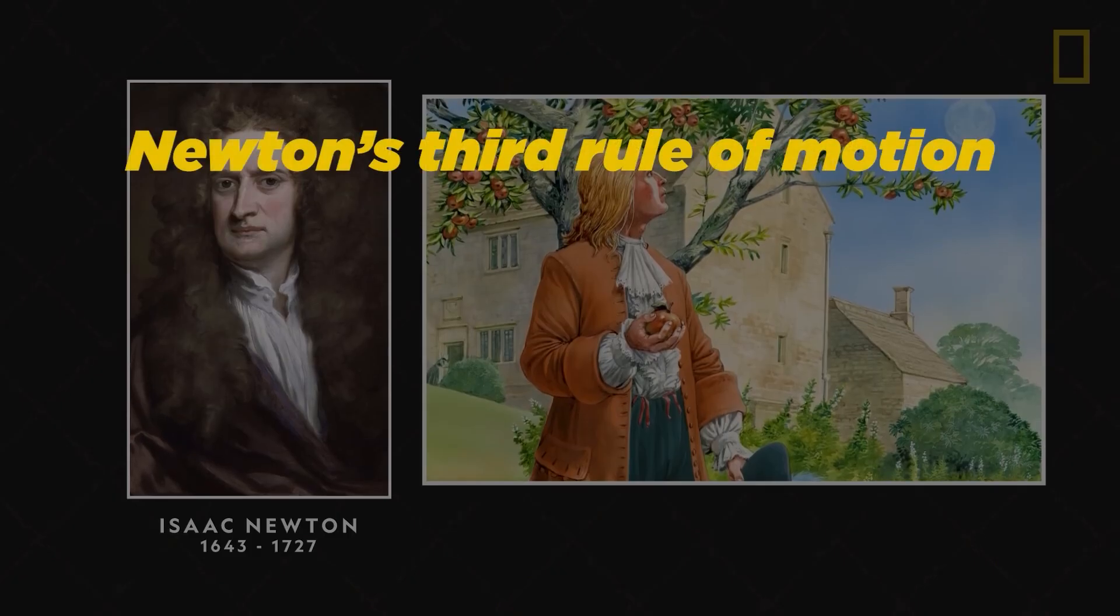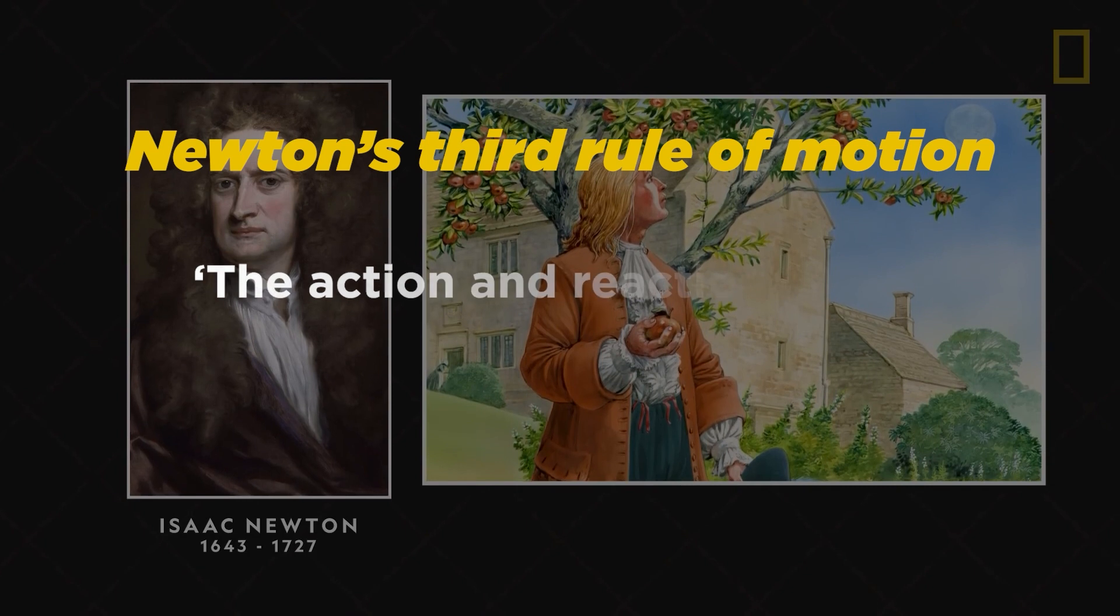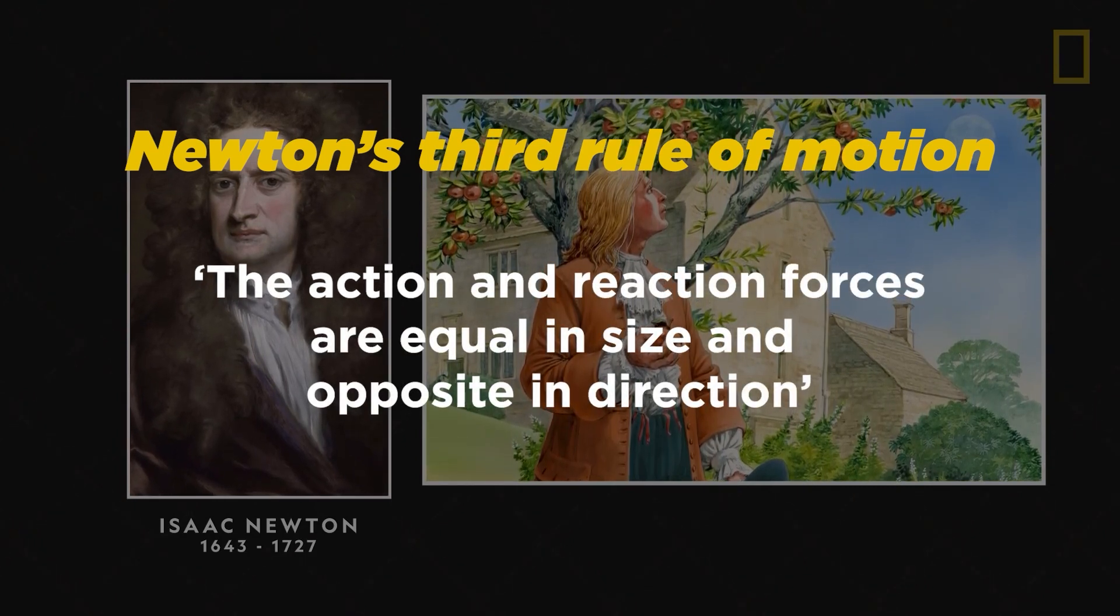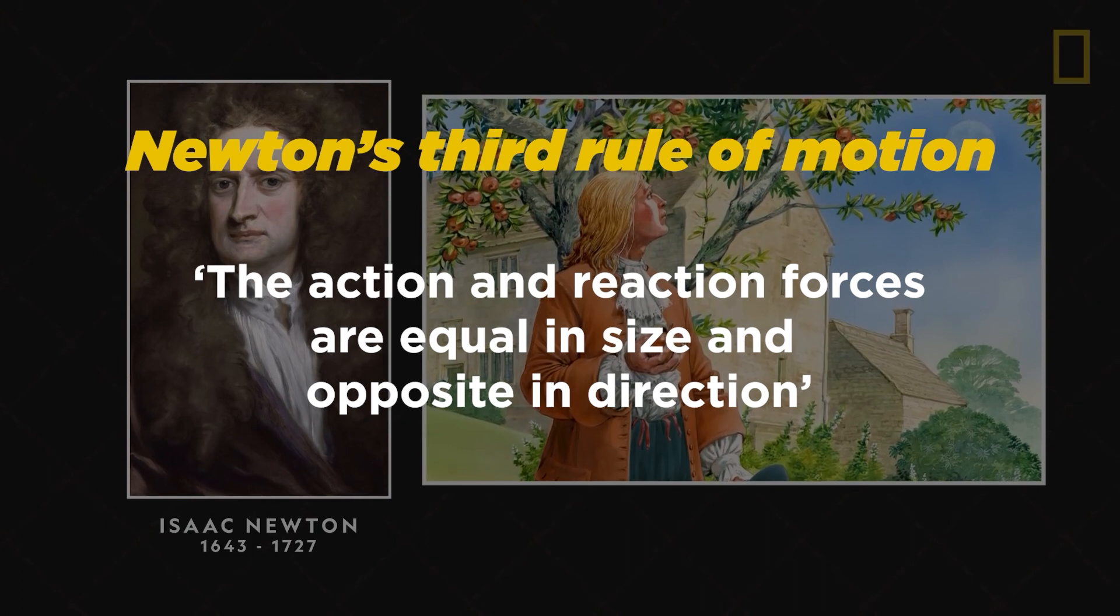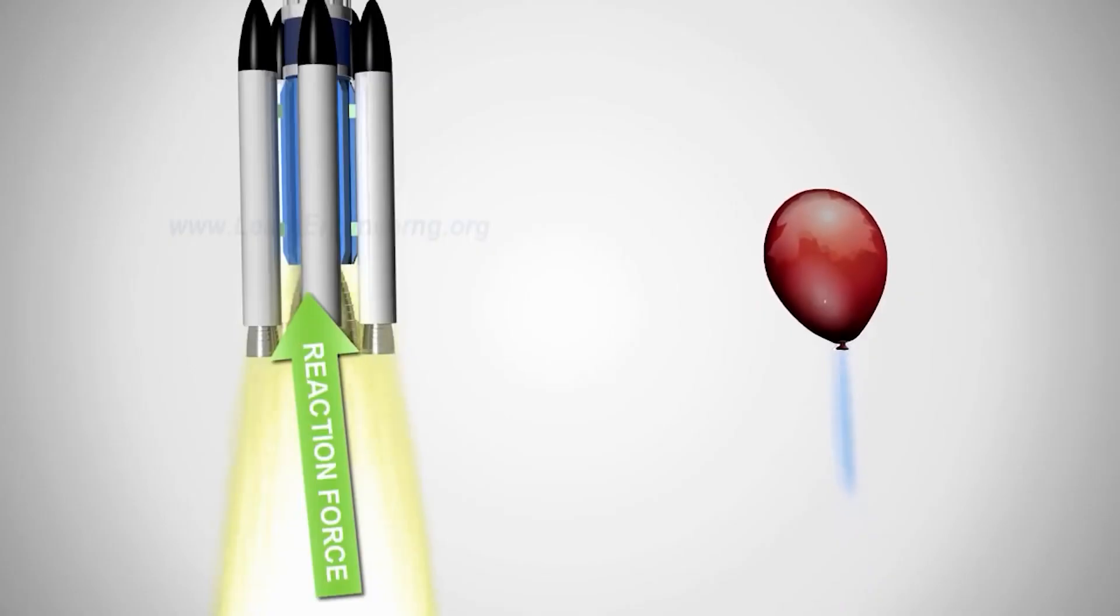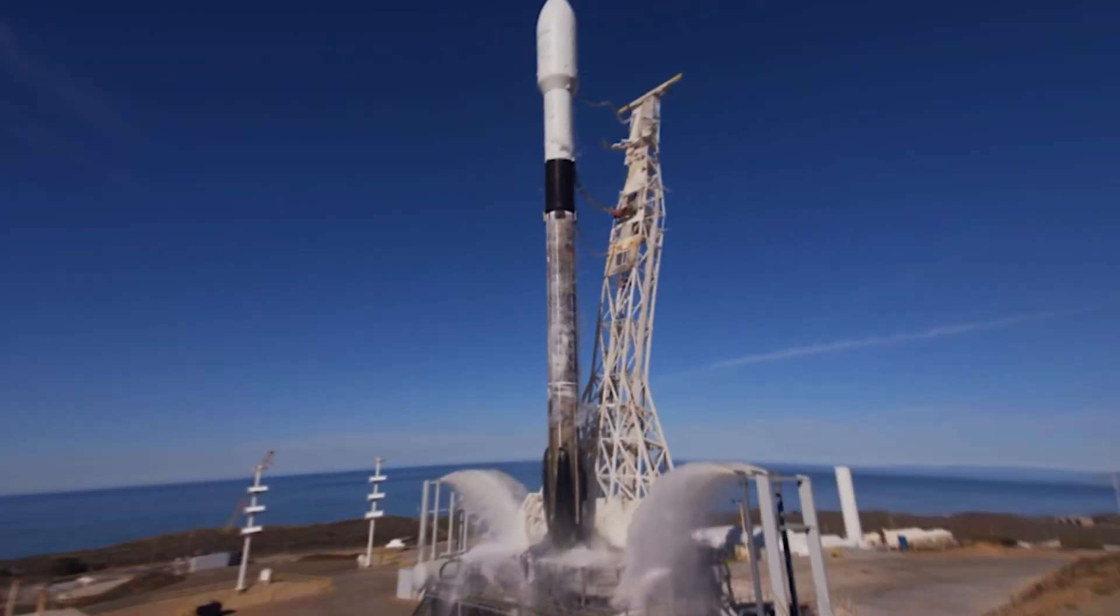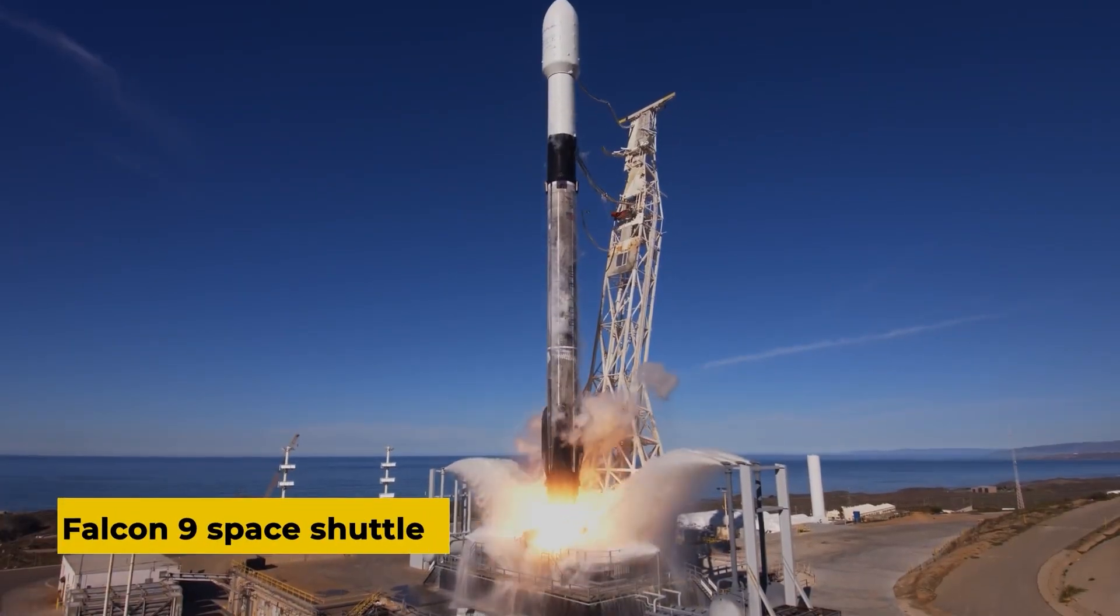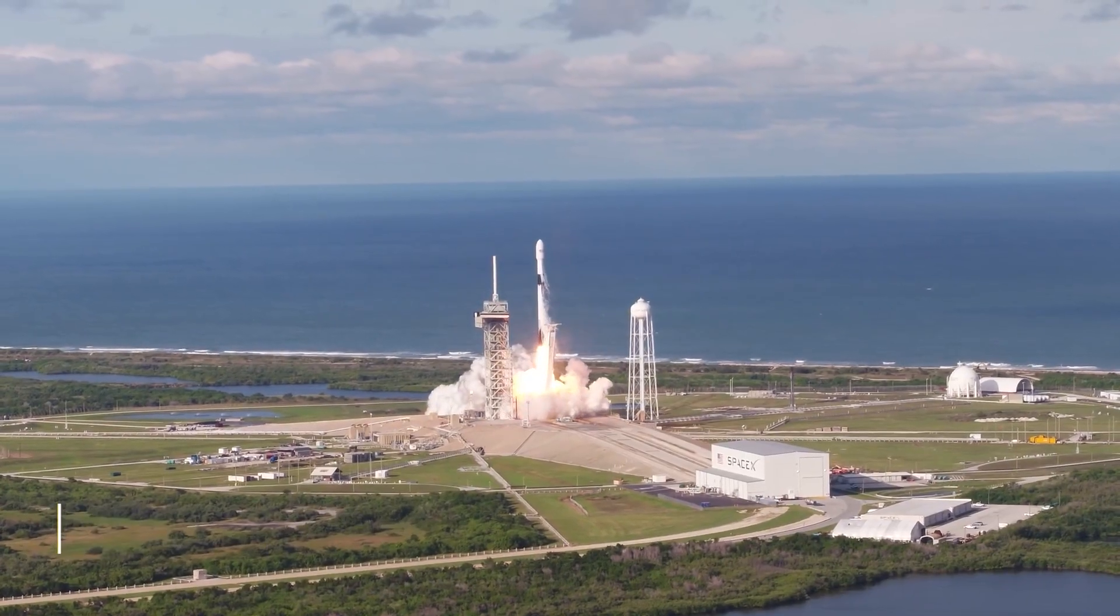The third rule of motion, which stipulates that the action and reaction forces are equal in size and opposite in direction, this Newton's law, is the foundation upon which rockets are built.